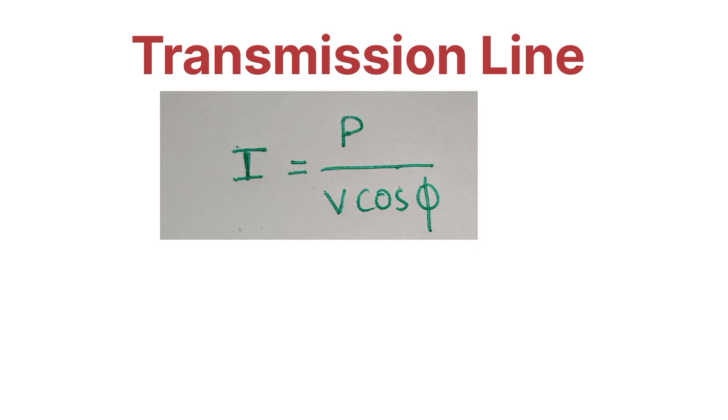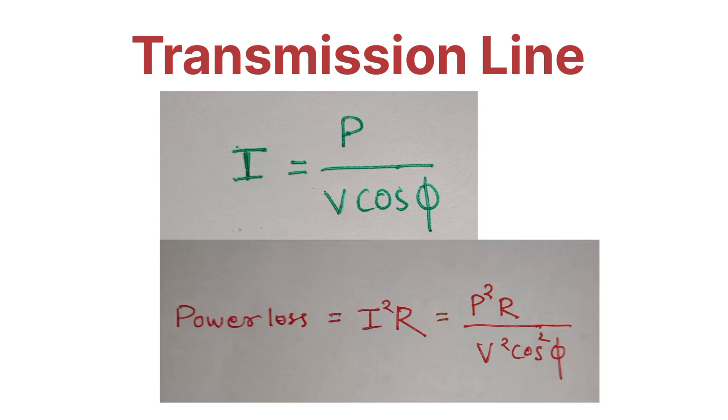We all know that loss is equal to I² R. By replacing the value of I in the loss formula, we get P² R divided by V² cos² φ.